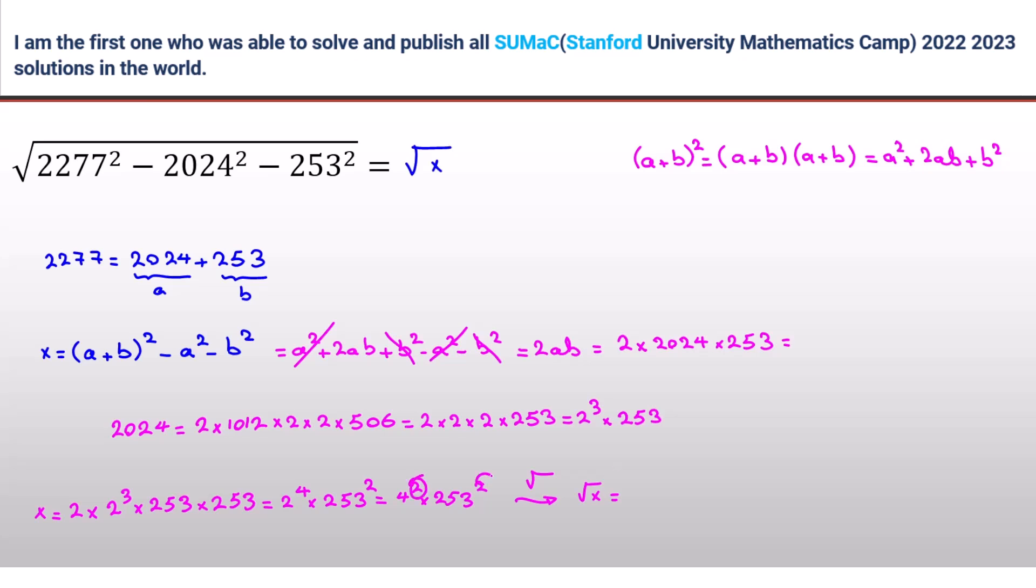We should divide the powers by 2. So it will be 4 times 253. So 4 times 3 is 12. We have 1, 4 times 5 is 20 plus 1 is 21. We have 2, 4 times 2 is 8 plus 2 is 10. So the answer is 1012.